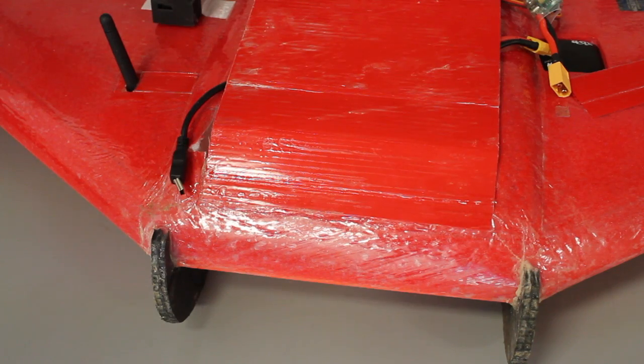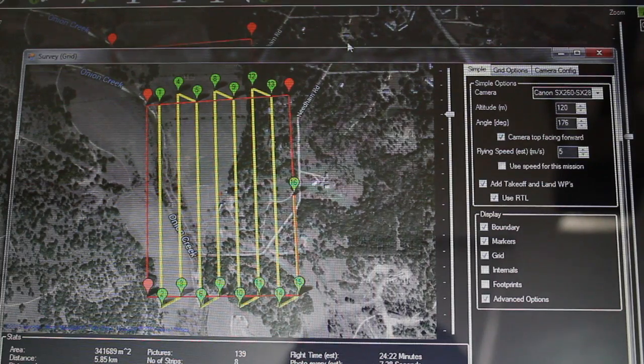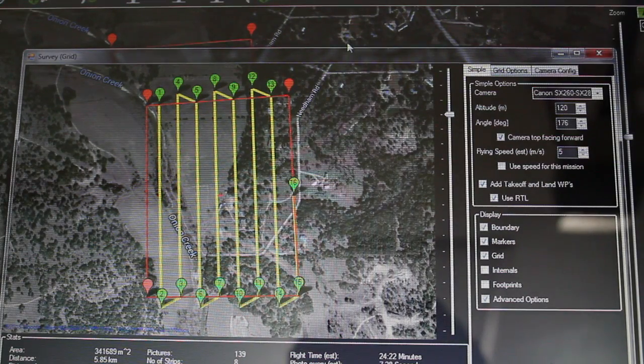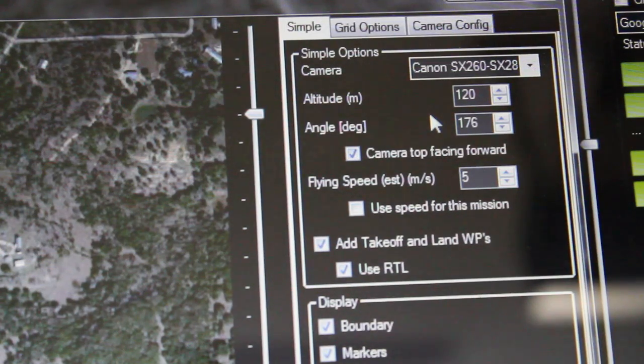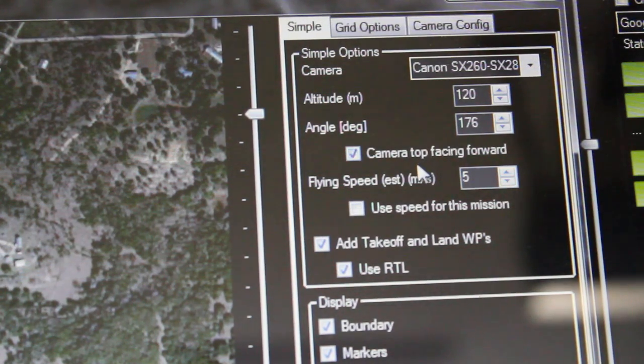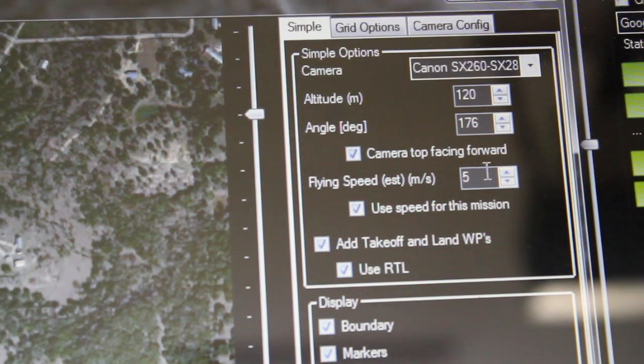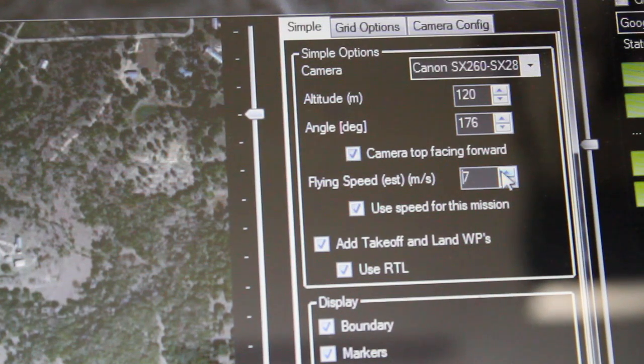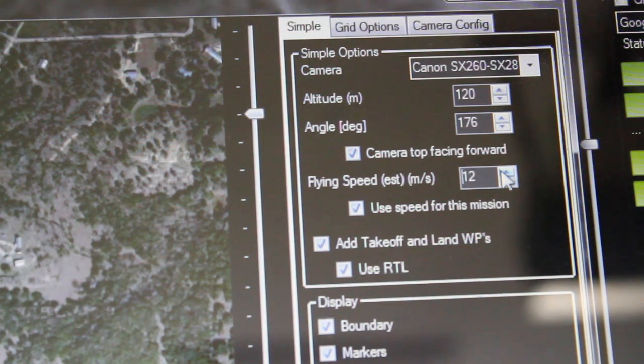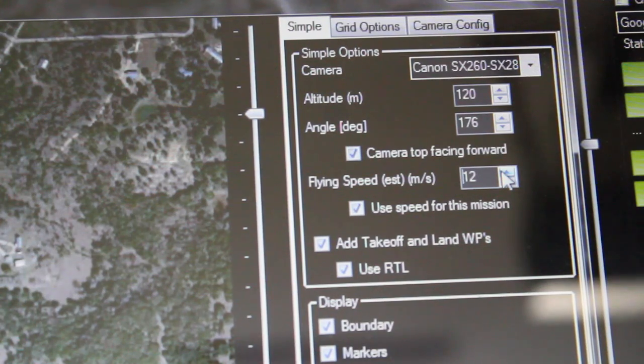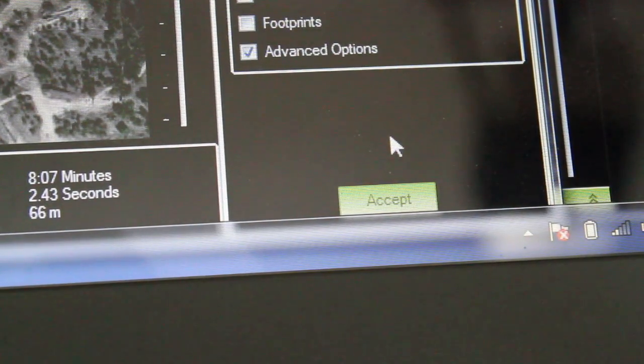So let me go ahead and show you guys Mission Planner and where I went wrong. So I'm in Mission Planner looking at the survey grid tool, and recently when I've been planning my missions I've been using the flying speed setting here. So you can click use speed for this mission. I'm flying with an airspeed sensor and I'll normally run that anywhere between 12 and 15 meters per second. So let's put that at 15 and then I'll accept the mission.